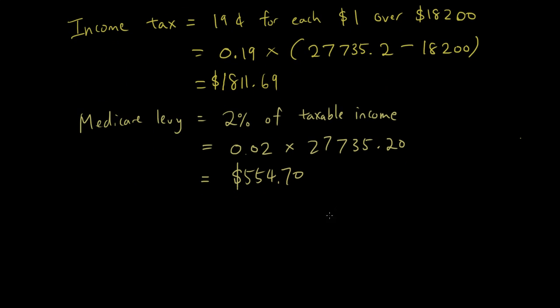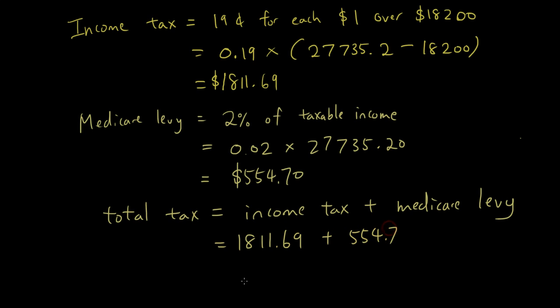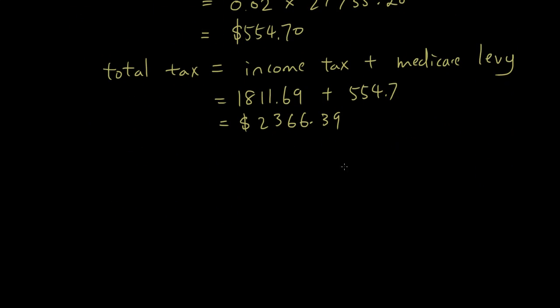That's how much Medicare levy you've got to pay and then adding that onto our income tax, that gives you your total tax. Income tax plus Medicare levy, that is how much tax you've got to pay in total. So 1811.69 plus 554.7, add them all together. We have $2,366.39 rounded to the nearest cent.